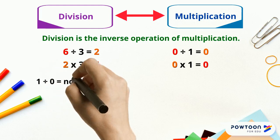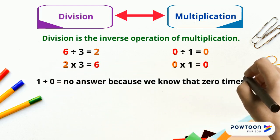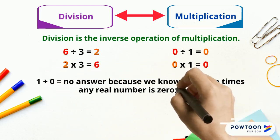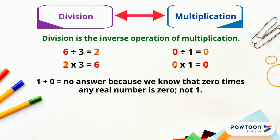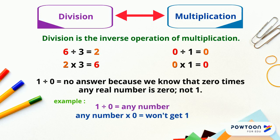One divided by zero is no answer, because we know that zero times any real number is zero, not one. Example: one divided by zero is equal to any number, but any number times zero won't get one. That's why it's undefined.